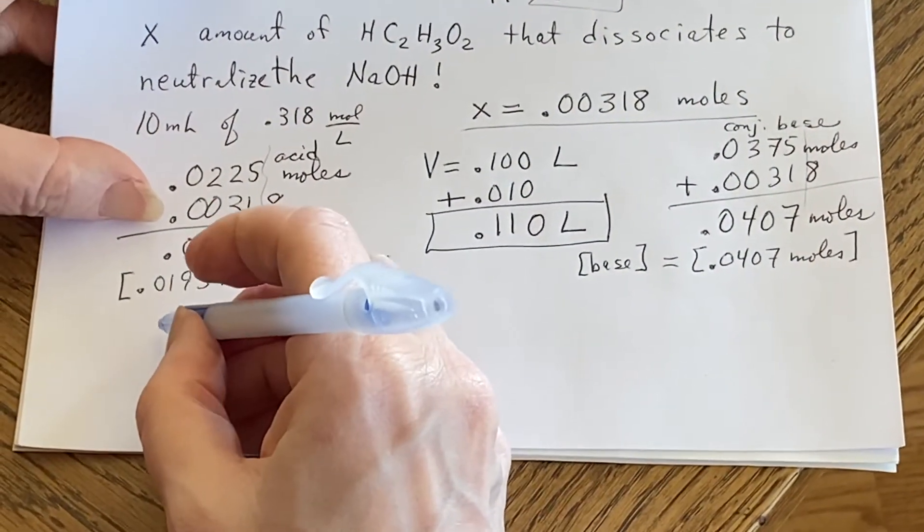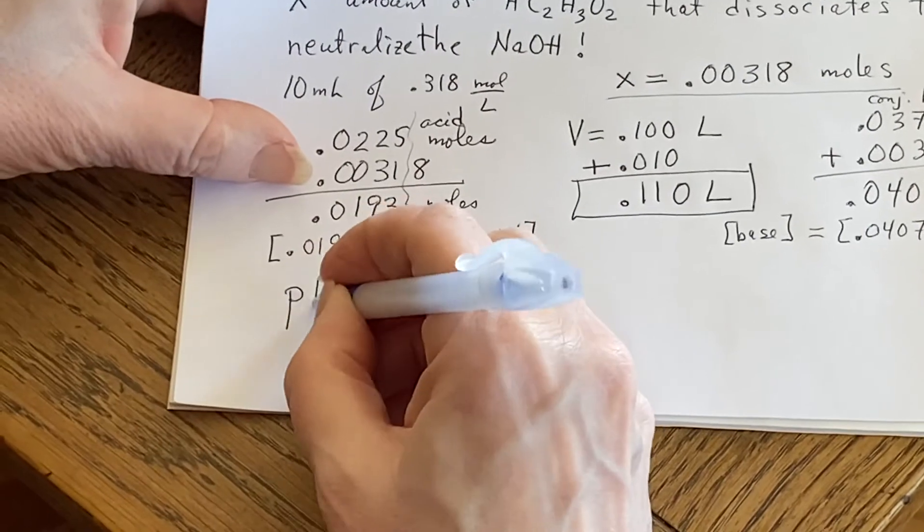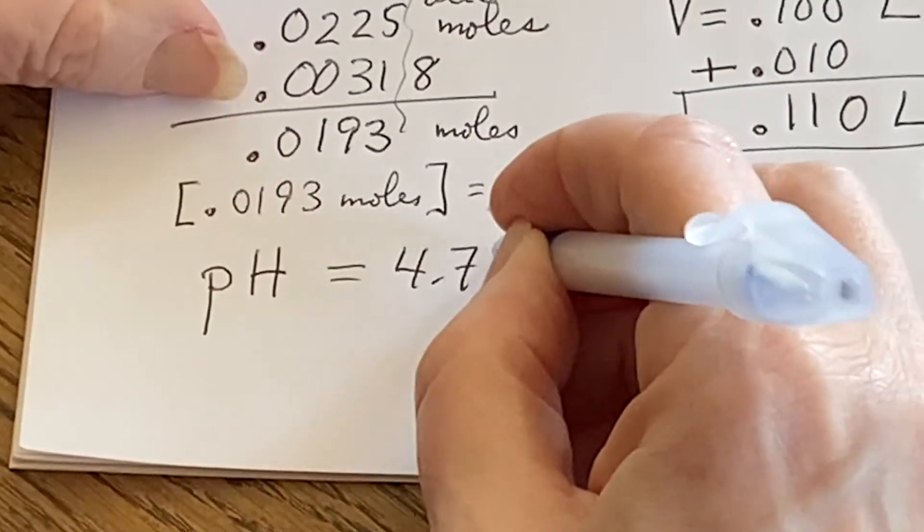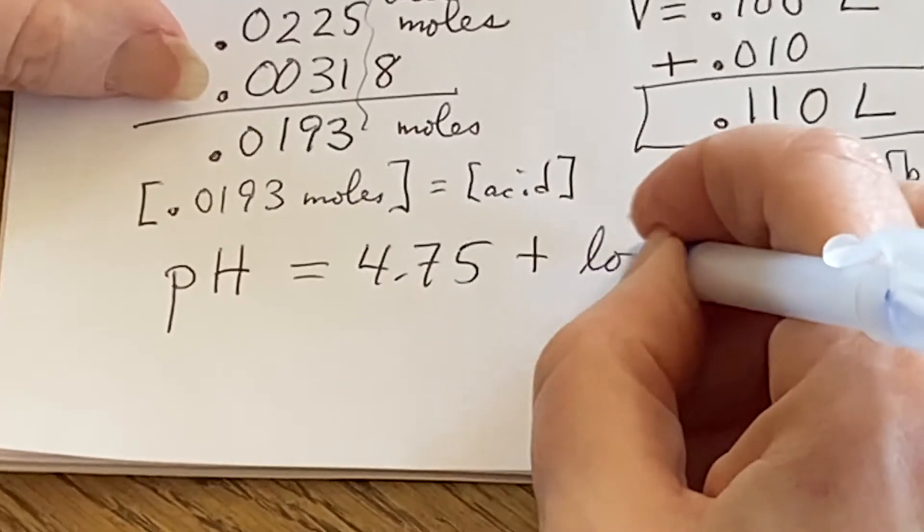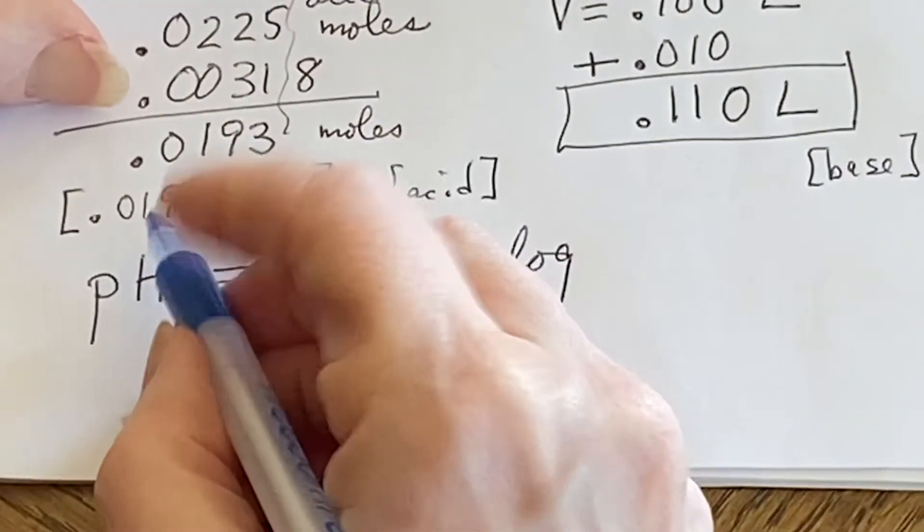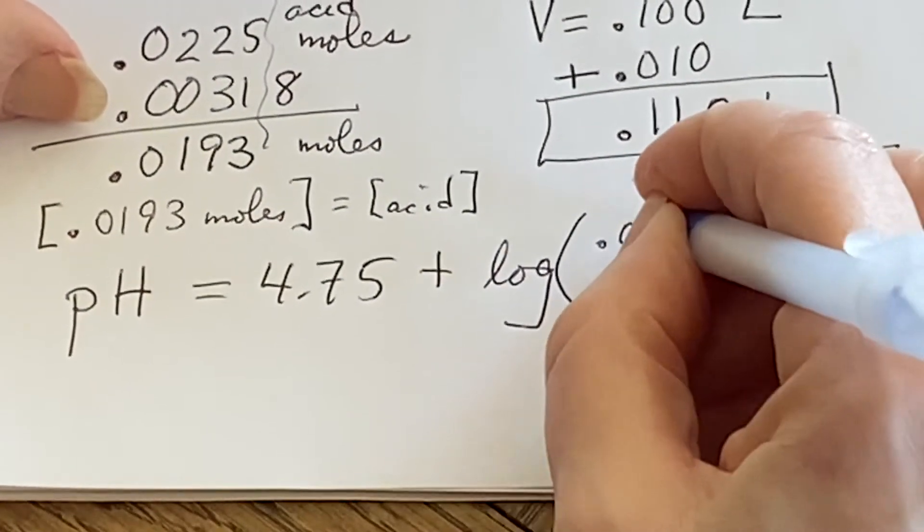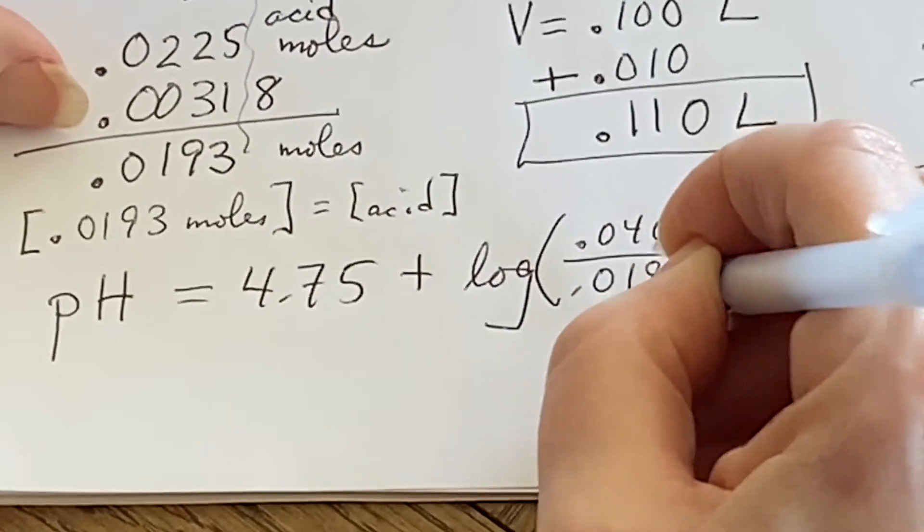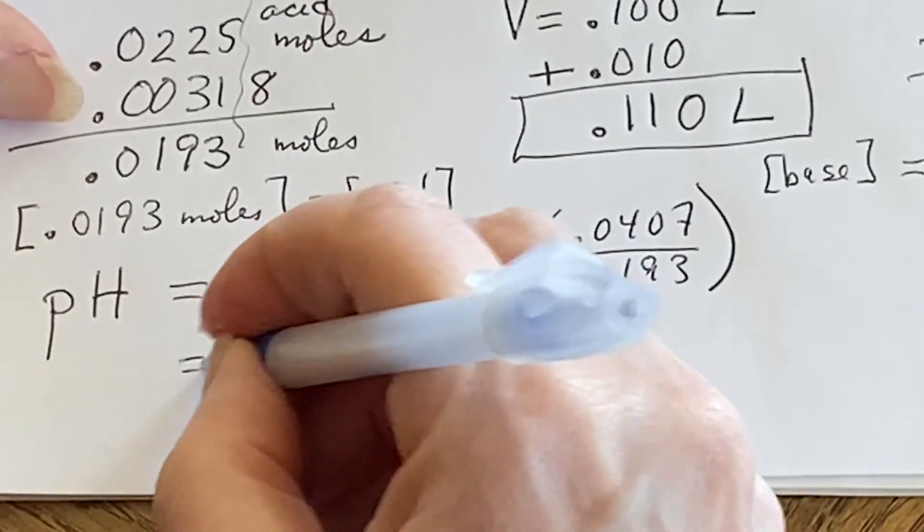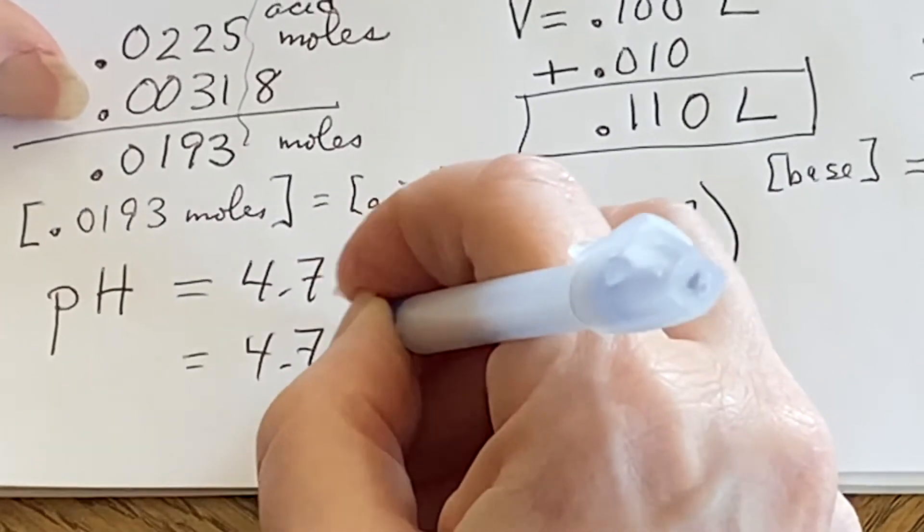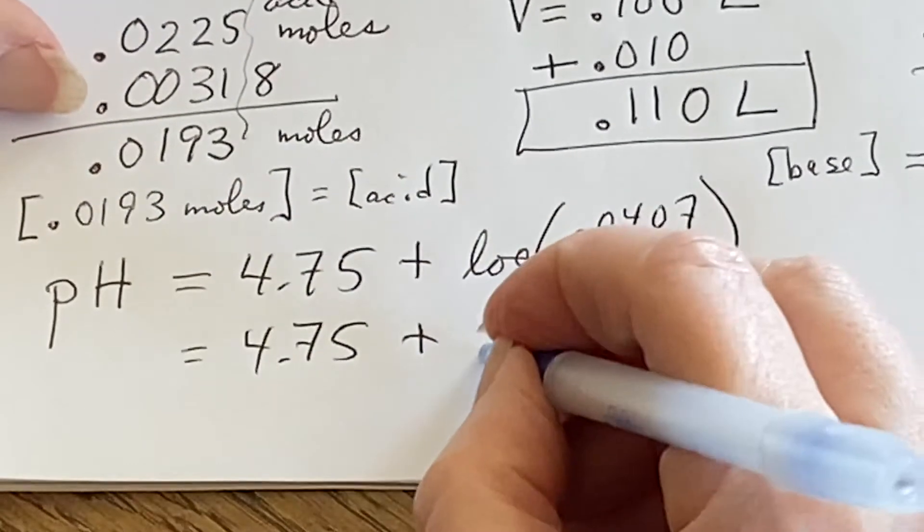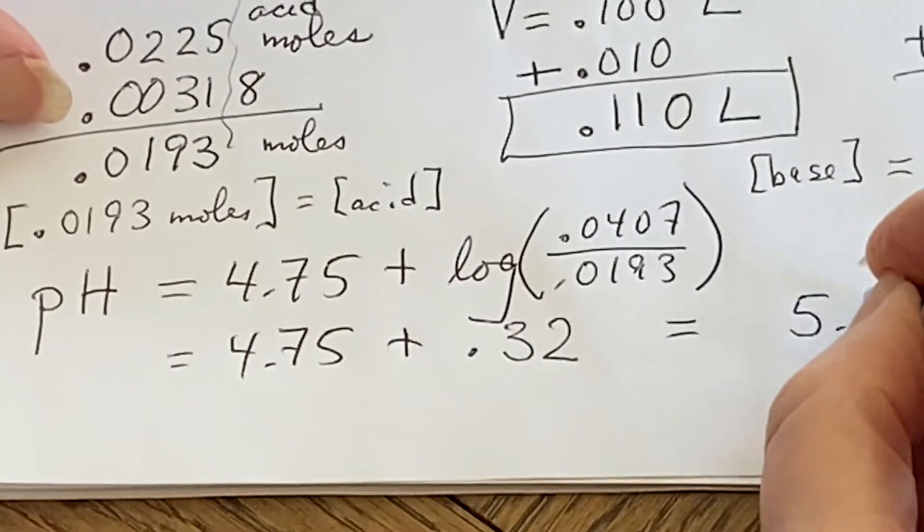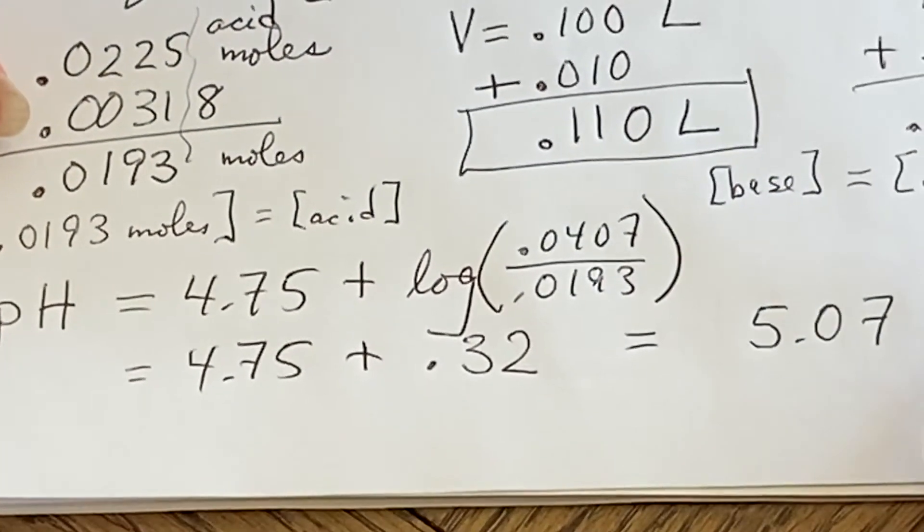Then I can just go ahead and put the numbers in to Henderson-Hasselbalch. pH, 4.75 plus the logarithm of base over acid. So the 0.0407 over the 0.0193. That's going to be adding 0.32. And I would end up with 5.07 as my new pH.